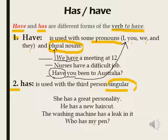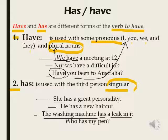Look at the examples for has. 'She has great personality.' She — singular — that's why I use has. 'He has a new haircut.' He — again singular. 'The washing machine has a leak in it.' The washing machine — مفرد — so I use has. Leak معناها تسرب للماء. 'Who has my pen?' Again, singular — I use has.